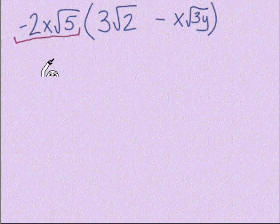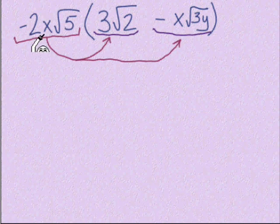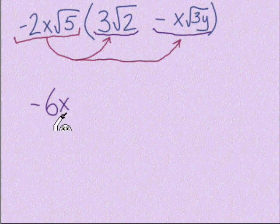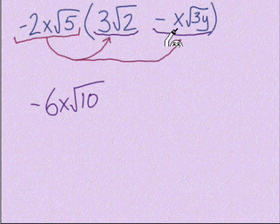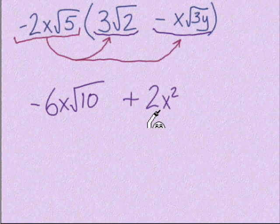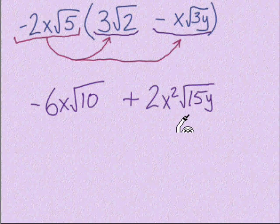It's one term in front multiplied by two terms in parentheses — definitely distributive property. With the first multiplication, the outsiders multiplied together: negative 2x times positive 3 gives us negative 6x on the outside, and inside the radical it's 5 times 2, so we have radical 10. The second multiplication — cautious with the sign — outsiders: negative 2x times negative x gives us positive 2x squared. The insiders: 5 times 3y gives us 15y inside the radical.